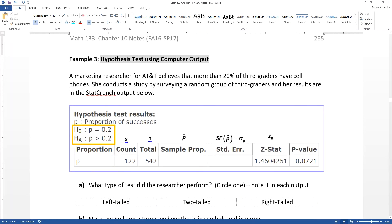So we have a hypothesis test here. A marketing researcher for AT&T believes that more than 20% of third graders have cell phones. She conducts a study by surveying a random group of third graders and her results are in the StatCrunch output below.